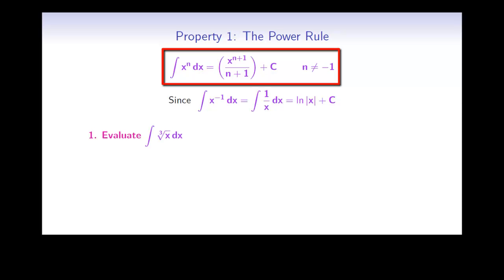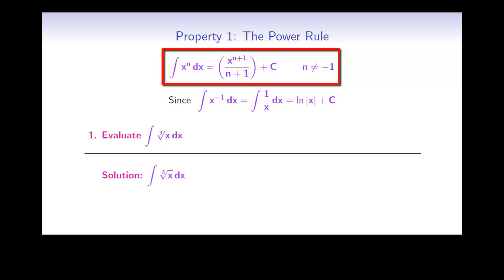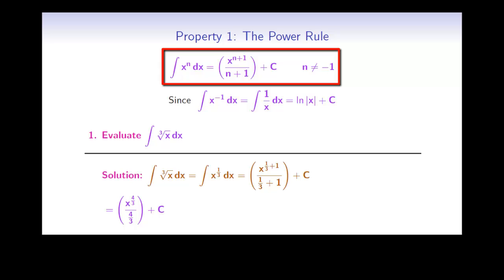Now let's look at an example. If we want to evaluate the integral of the cube root of x, we start by rewriting this as x to the power of one third. Now we use the power rule: increase the exponent by 1, then divide by the new exponent. This simplifies to x to the power of 4 over 3, all divided by 4 over 3, plus a constant. Dividing by 4 over 3 is the same as multiplying by 3 quarters, giving us 3 times the fourth root of x cubed, all divided by 4, plus a constant.